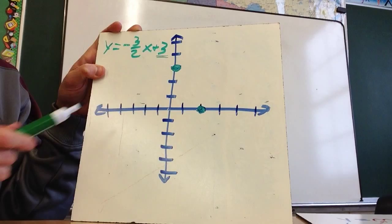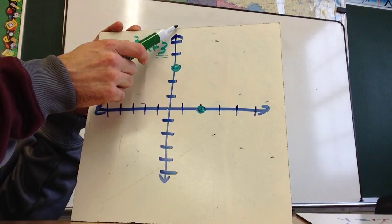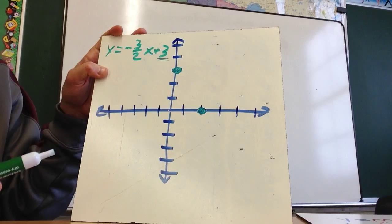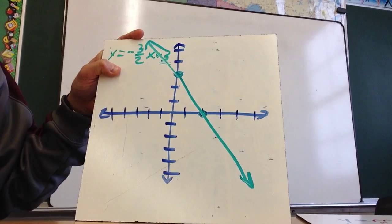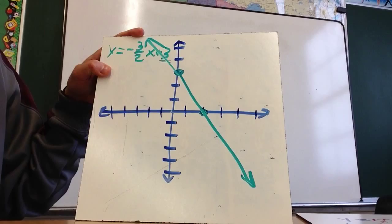The other thing you could have done if you wanted to make this negative 2 is you could have rose 3, 1, 2, 3, and then ran to this direction, still be along that same line. If you want to find another point, you could go down 3 and over 2 again. But at this point, I have my two points on my line, and so I can draw a line. So the equation of the line negative 3 halves x plus 3 equals, or is this.